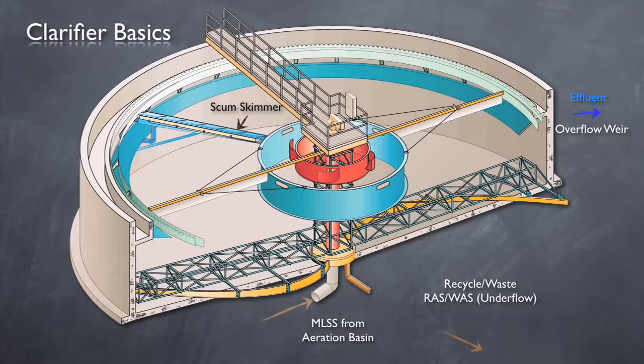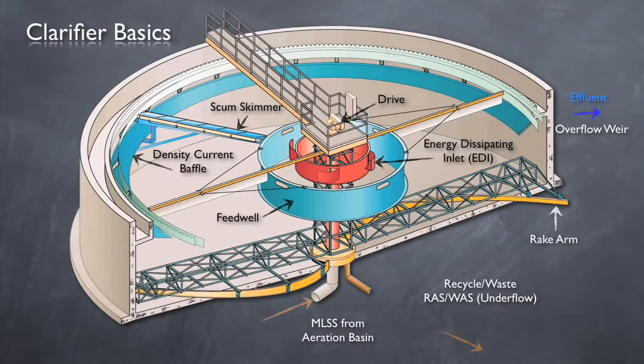Without going into too much detail, some other important components of a circular clarifier include the rake arms, an energy dissipating inlet, the drive mechanism, a feed well, and a density current baffle.